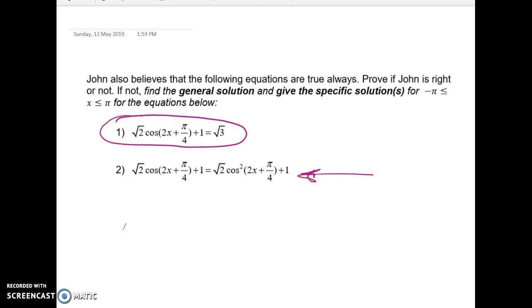John also believes that the following equations are true always. This follows on from the first one where we proved that the equations were true always. We did that using the features of the graph and using an identity. So here we have to say whether John is right or not, and it turns out that he's not, he's wrong. But what we've got is a situation where sometimes this is a true statement.